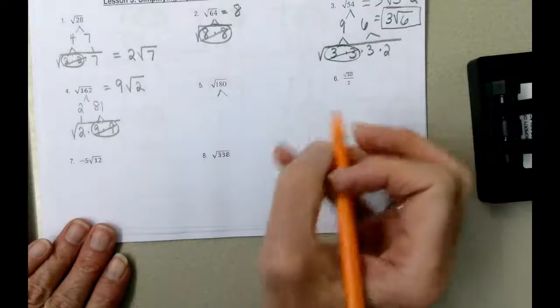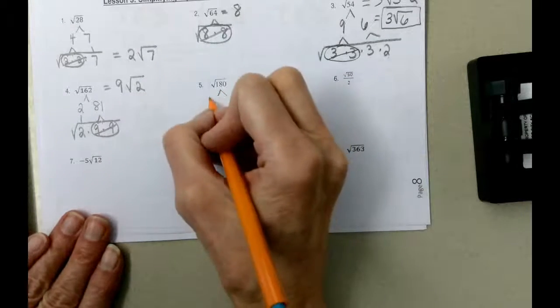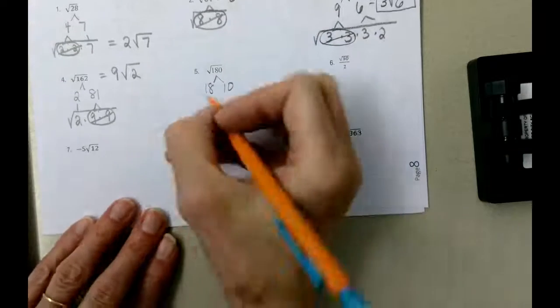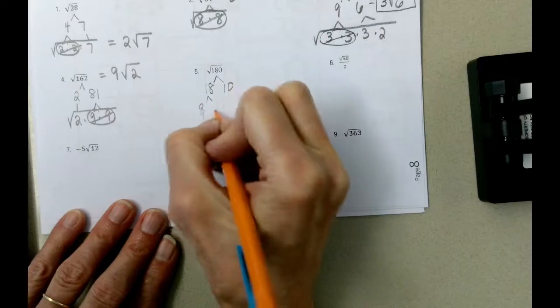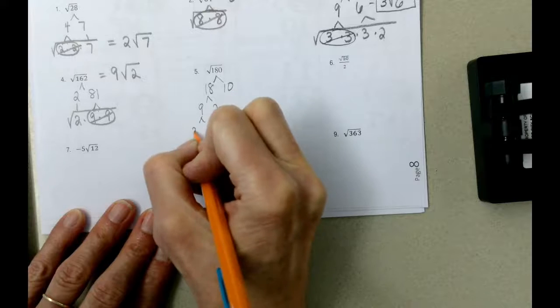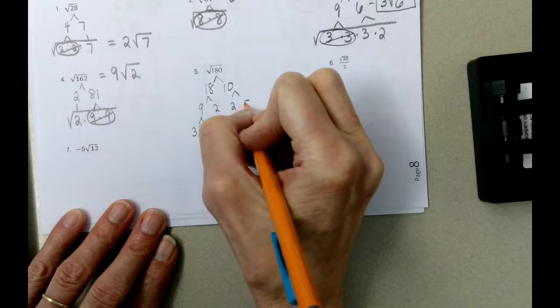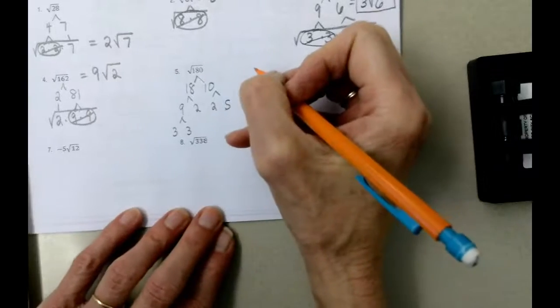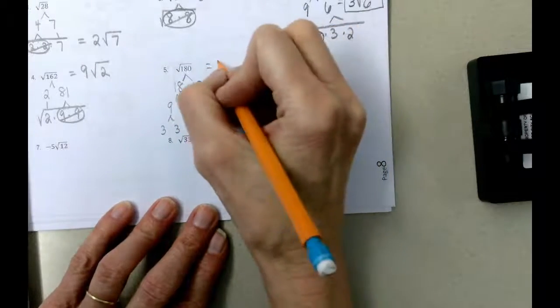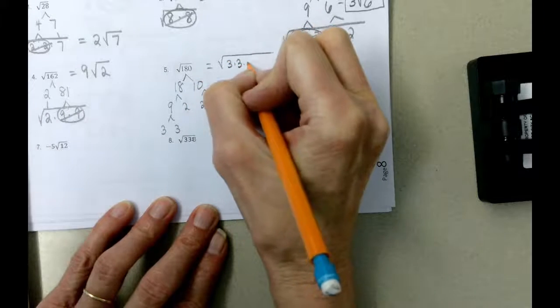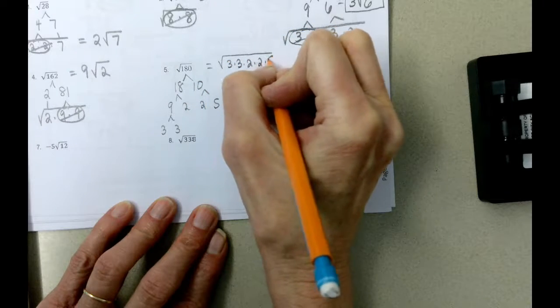180, when we simplify the square root of 180, we're going to use 18 times 10, that is not your only choice. 18 is 9 times 2, and 9 is 3 times 3, 10 is 2 times 5, and I need to write this a little bit more streamlined. So 180 is 3 times 3, times 2, times 2, times 5.